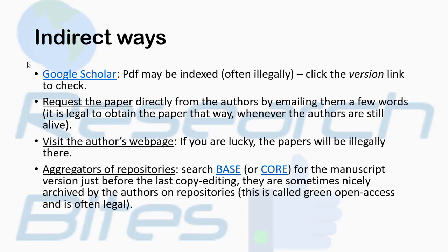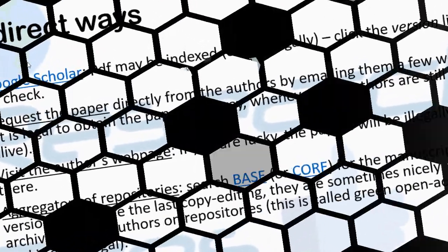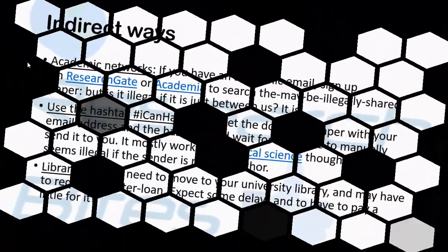Thirdly, you can visit the author's webpage. For example, if I know that a professor at Punjab University has written an article published in Elsevier and I cannot get that article, I will go to the Punjab University website, find that professor's profile, and look at their CV or publications list. There is a possibility the article is available there. You can also get articles from repositories like ResearchGate.